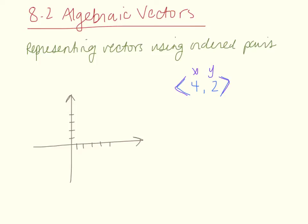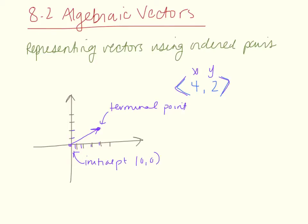So if I were going to graph that, I would go out 4 in x and up 2 in y. This is now the terminal point of my vector. My initial point is at the origin, so my initial point is (0, 0) and my terminal point is (4, 2). That is how I would draw a vector in what is called standard position.